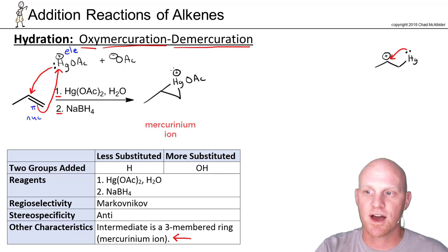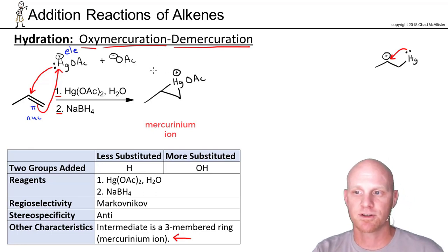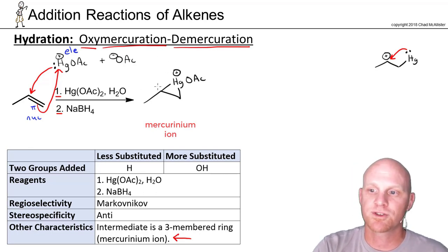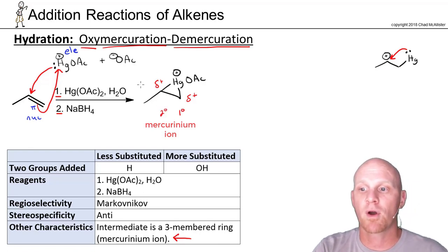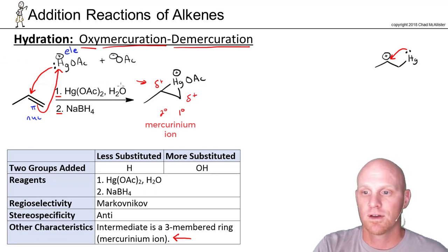That's going to leave this mercury still having a positive formal charge. So it turns out that positive formal charge is shared a little bit on the secondary carbon and a little bit on the primary carbon. But because primary carbocations are not as stable as secondary, there's more of that partial positive charge on that secondary carbon. That'll become relevant here in the next step. Water is going to come along and water could attack either one of these partially positive carbons to open up this ring.